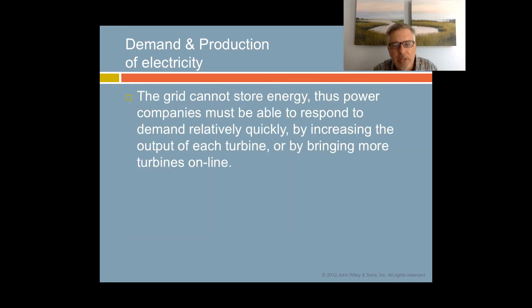The one downside of electricity is that the grid cannot store energy. That means that power companies must be able to respond to demand relatively quickly. They need to be able to do that by increasing the output of each turbine or by bringing more turbines online and doing that quickly. The alternative is that the whole system shuts down and you get a blackout.